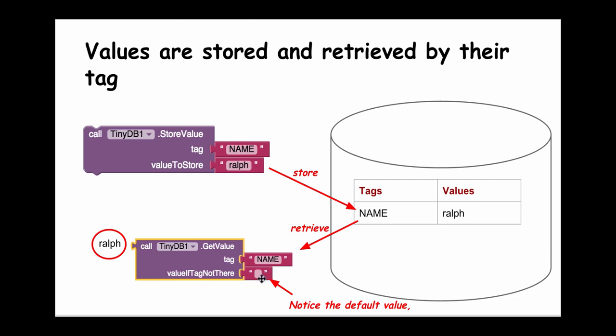This default value is what this block will return if it looks for NAME and doesn't find it in the database. So it'll return the empty string. That's an example of storing a string in the database. This string that's returned, Ralph, can be assigned to another block or another variable. You can do whatever you want with it.